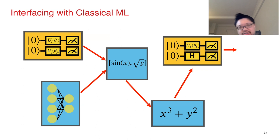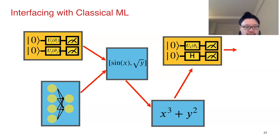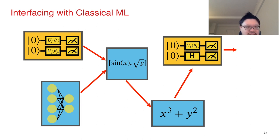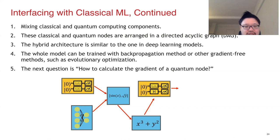Since we have the variational circuit, we know how to encode classical values into a quantum state, and we know that the output from a quantum circuit can be further processed by classical or other quantum models. We can then build very complex architectures. This is the hybrid quantum-classical paradigm — multiple components can be connected such that a directed acyclic graph is formed. In theory, the whole model can be trained in an end-to-end manner. We already know how to calculate the gradients of classical components; the next big question is how to calculate the gradient of a quantum node.